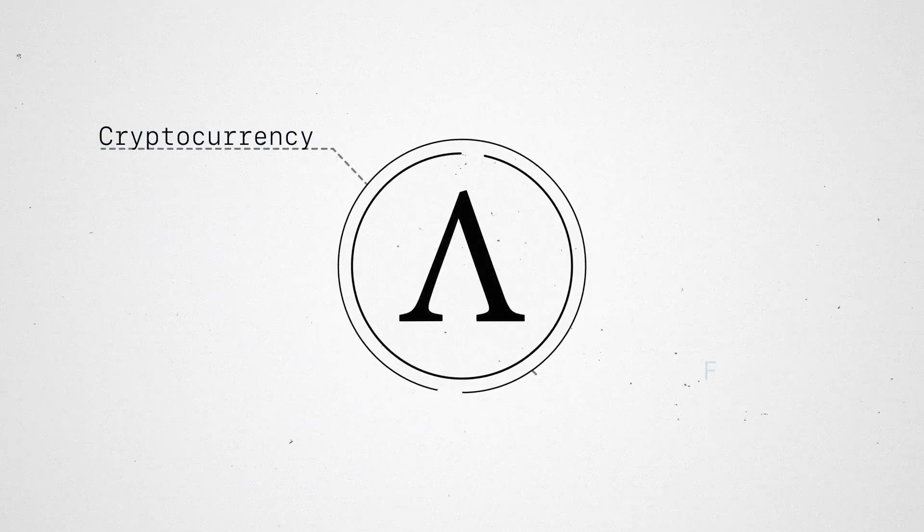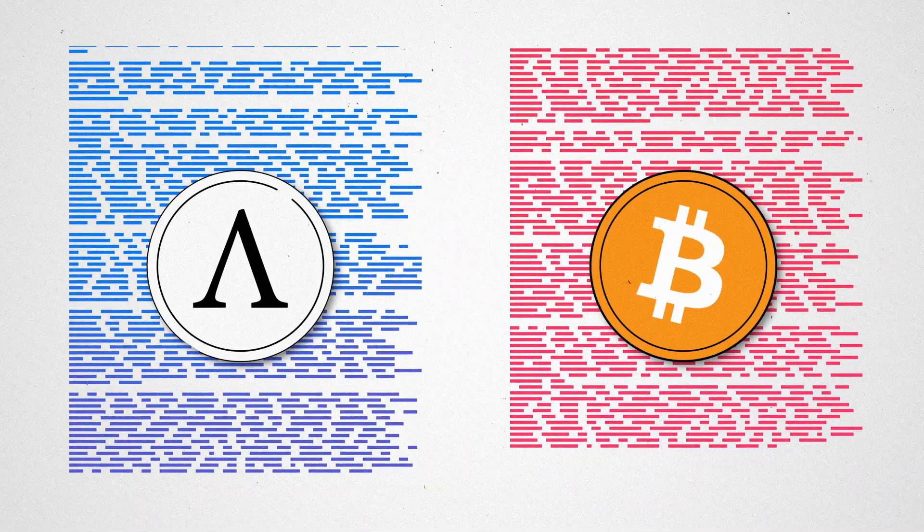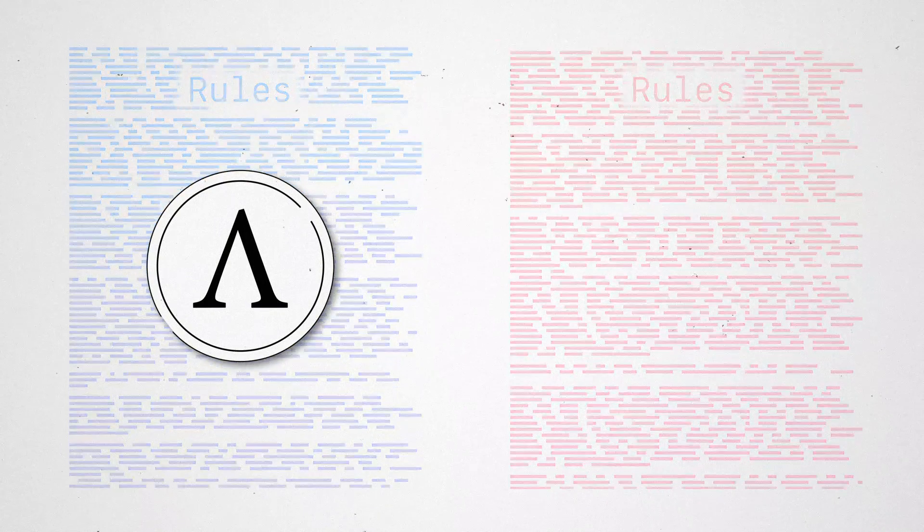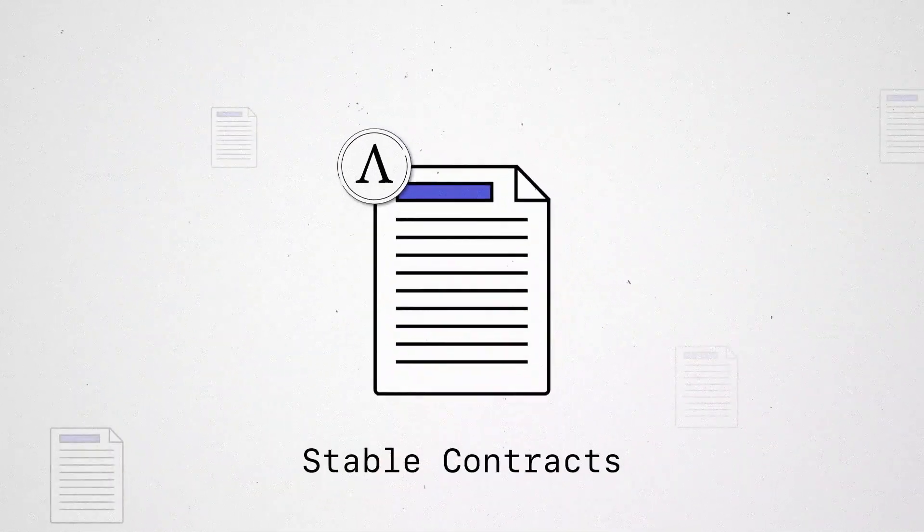The Ample is a cryptocurrency and financial building block. Like Bitcoin, Ample is defined entirely by a set of rules. But unlike Bitcoin, Ample can be used to denominate stable contracts.